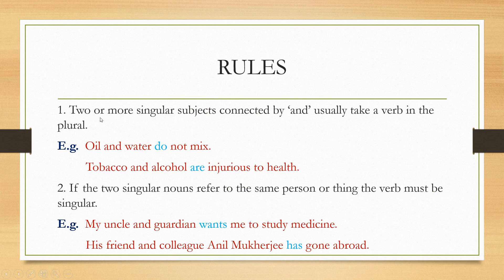Rule number one: two or more singular subjects connected by 'and' usually take a verb in the plural. For example, 'oil and water do not mix.' Oil is one noun and water is another noun. We have joined them with the conjunction 'and', so it becomes a plural subject. Oil and water is a plural subject, and we are using the plural verb 'do' — not 'does'. So when two or more singular subjects are connected by 'and', it becomes a plural subject and the verb should be plural.